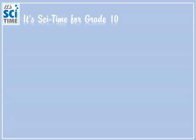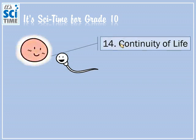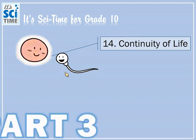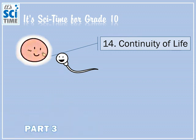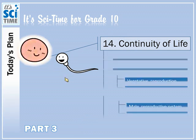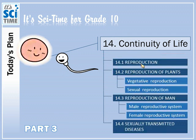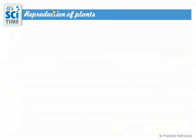It's science time for Grade 10 students. These days we are talking about the 14th unit, the continuity of life. This is the third part of that video set. We have some subtopics to discuss under continuity of life. The first one, the reproduction part, is finished — introduction to reproduction and reproduction of plants. Today we will talk about sexual reproduction of plants.